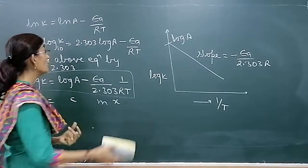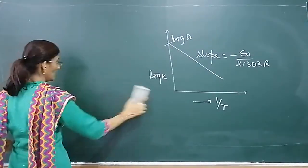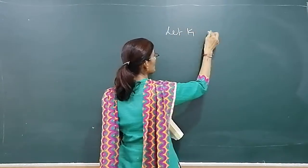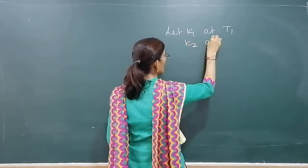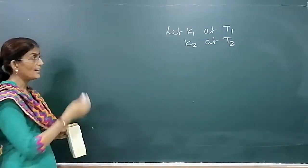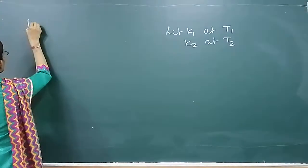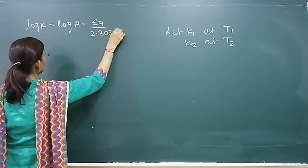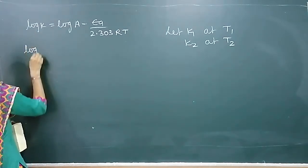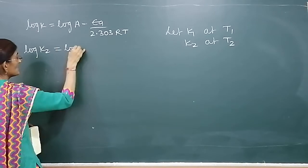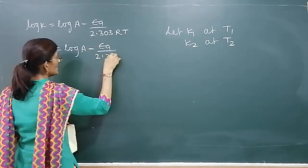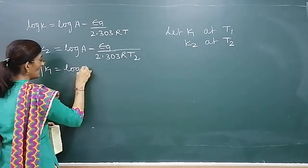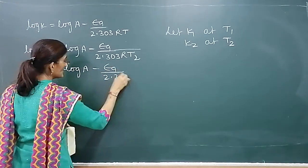Now if we have two temperatures, suppose two rate constants are calculated at two temperatures. Let K1 be the rate constant at temperature T1, and K2 be the rate constant at temperature T2. We know that log k = log A − Ea/(2.303RT). Putting K2 and T2: log K2 = log A − Ea/(2.303RT2). Putting K1 and T1: log K1 = log A − Ea/(2.303RT1). Now subtract the second equation from the first.